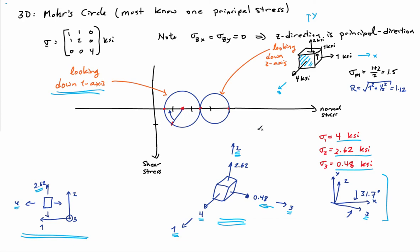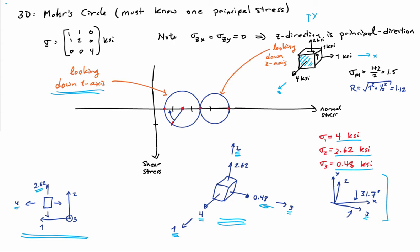That's why you need to know one of the principal axes to start the process. I can also draw one other circle connecting the first and the third principal stress — as though looking down the two axis. Looking down the second principal axis, you'd see a stress element with 4 KSI in the one direction and 0.48 KSI in the three direction, allowing me to draw the third principal circle. In 3D, you get three circles in the Mohr's Circle diagram. The maximum shear stress overall occurs on the largest circle — the one connecting the first and third principal stresses — giving a value of 1.76 KSI.